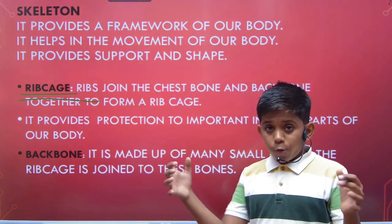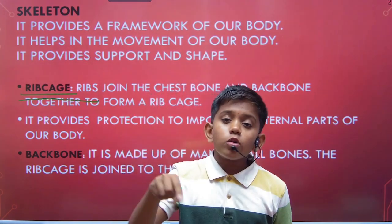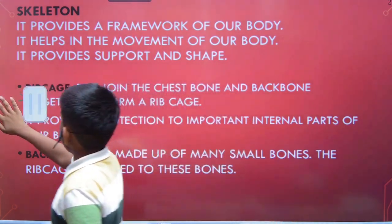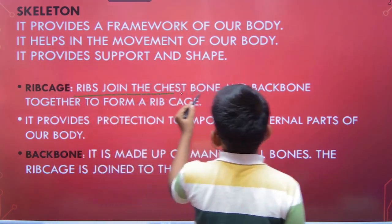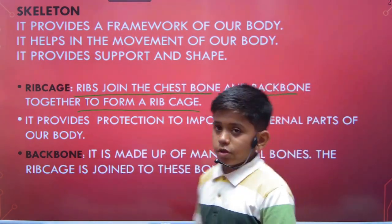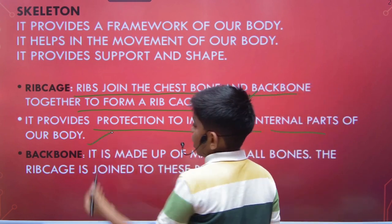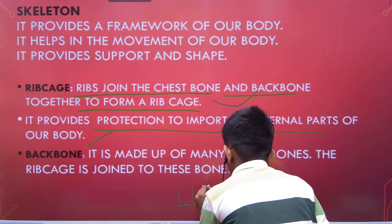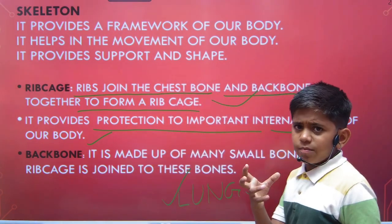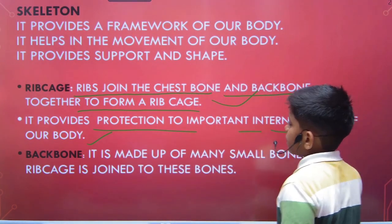Next we have the rib cage. The rib cage protects the lungs. Ribs join the chest bone and the backbone together to form the rib cage. It provides protection to important internal parts of the body — the lungs, which we use for respiration or breathing. The lungs are very sensitive, so to protect them we have the rib cage.